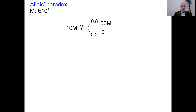I will now tell you what the majority preference is. The majority preference is this: most people prefer the 10 million for sure. They really like that certainty, so they say this left option is best for them.